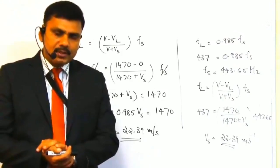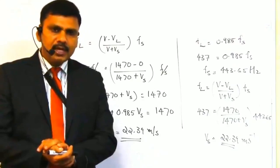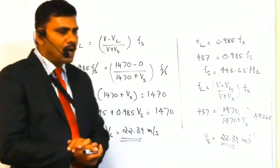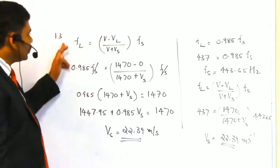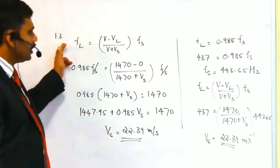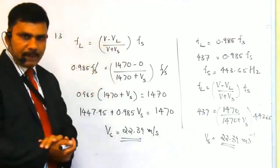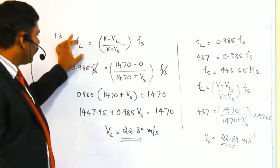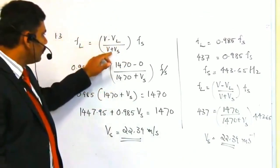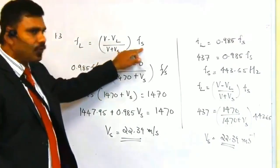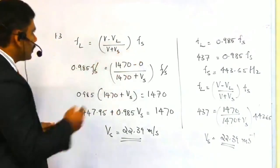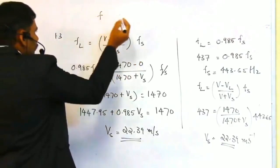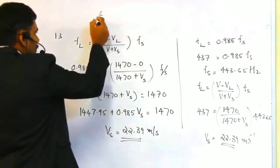That is the second question. For the third question, we need to calculate the speed of the ship. There are two methods to solve this problem. Here we use the formula: FL = (V − VL) / (V + Vs) × Fs, because the frequency detected by the submarine is less than the frequency of the source.